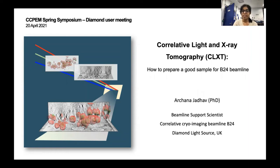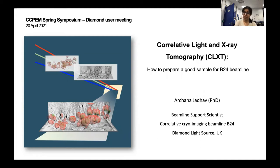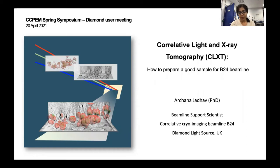Hello everyone, my name is Irshina Zadhav. I work as a beamline support scientist at B24 beamline. Today I'm going to talk on how to prepare good samples for B24 beamline in relation with correlative light and x-ray tomography. This is part two of the presentation. The prior presentation has already been recorded by my colleague Mohamad Courant.